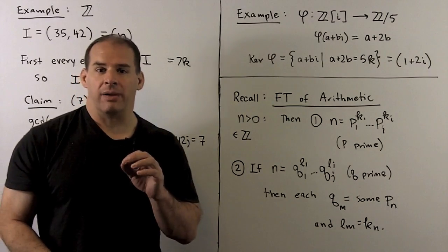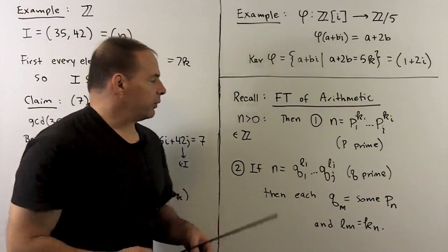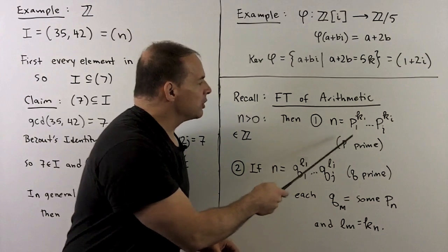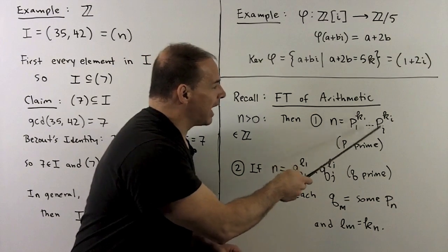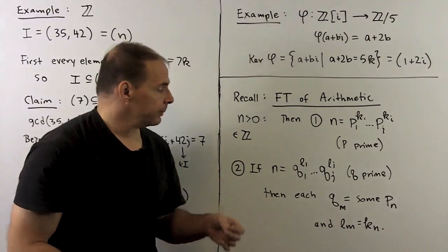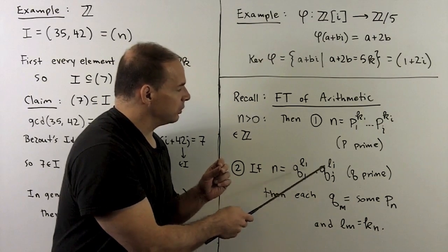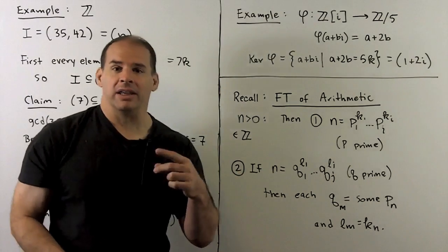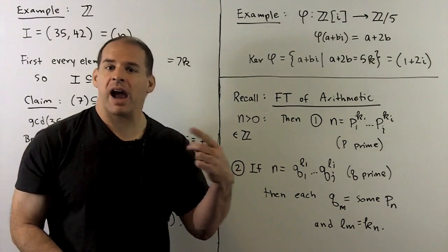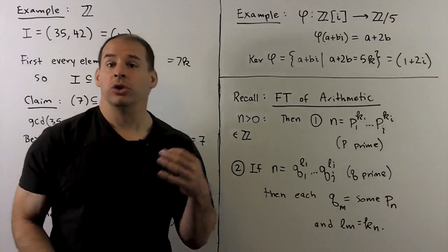Another property we have for principal ideal domains: let's recall the fundamental theorem of arithmetic. If we have a positive integer n, first we can factor it into powers of primes: n = p₁^k₁ · … · pᵢ^kᵢ, where the p's are primes. The second part is that the factorization is unique: if we have another factorization q₁^l₁ · … · qⱼ^lⱼ with the q's prime, then each qₘ equals some pₙ and the exponents must be equal. This property is called the unique factorization property.